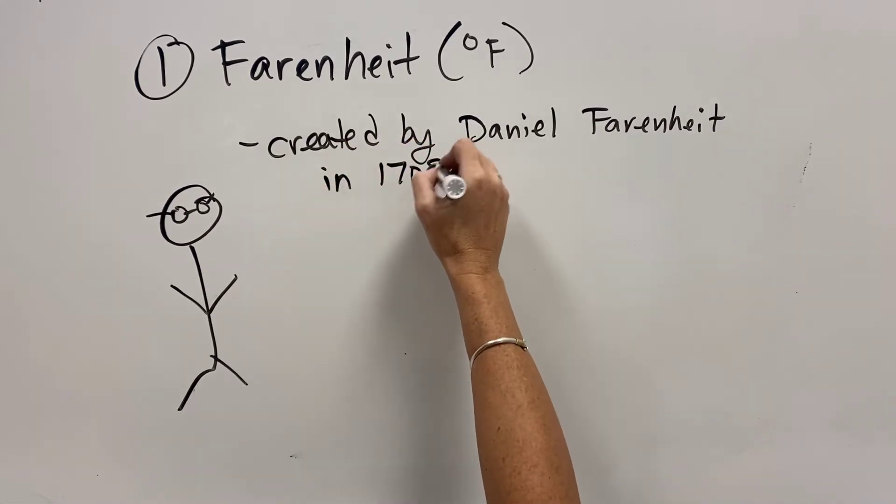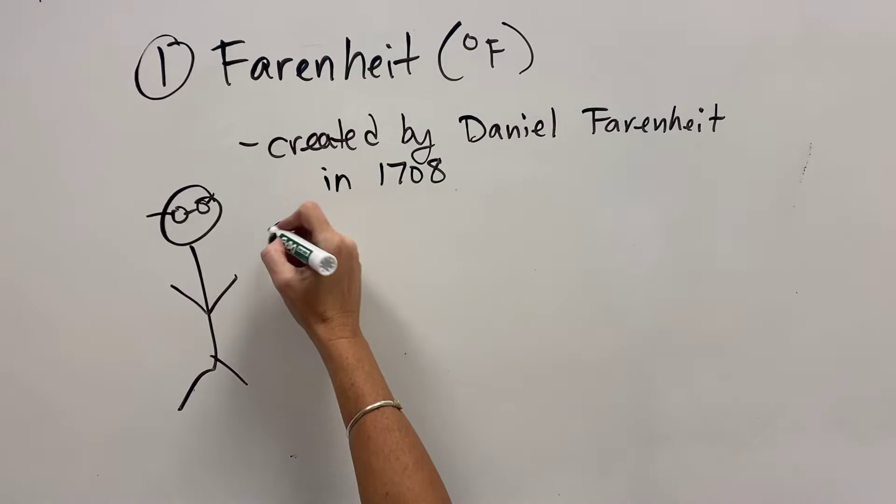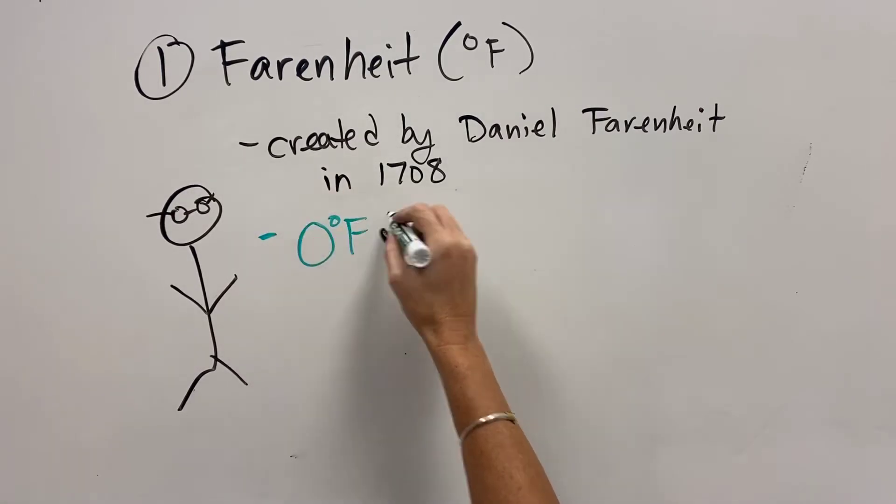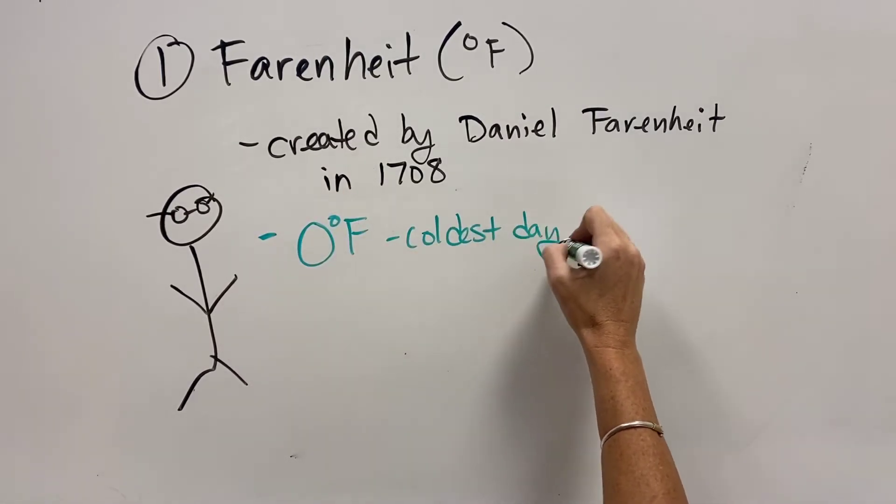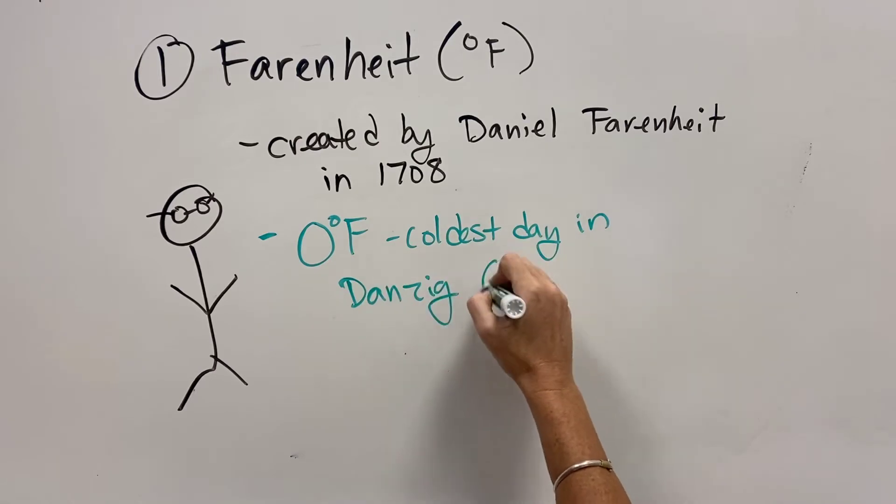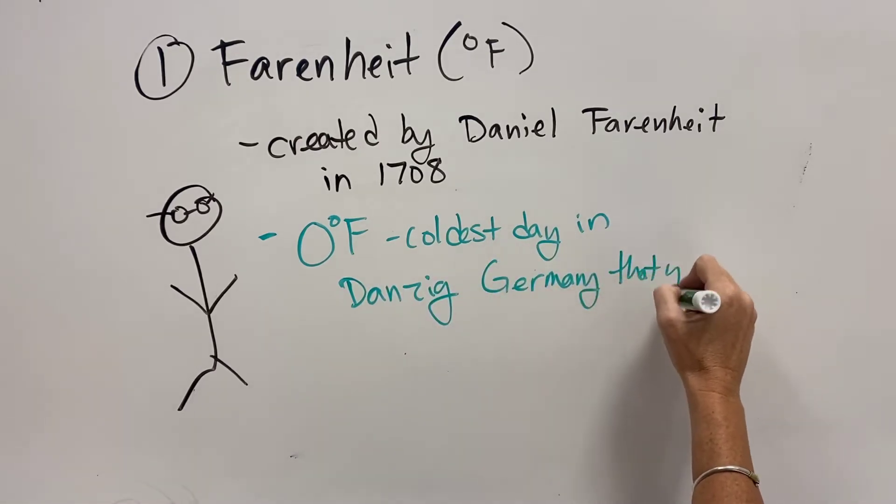It's created by this dude, Daniel Fahrenheit, in 1708. So over 300 years ago, he decided to make zero degrees Fahrenheit the coldest day in Danzig, Germany that year. Literally why zero degrees Fahrenheit is zero.